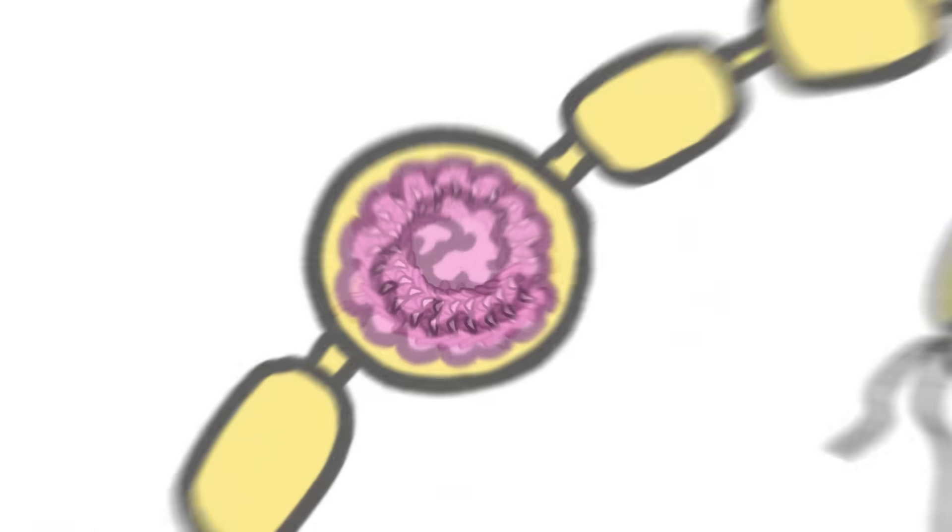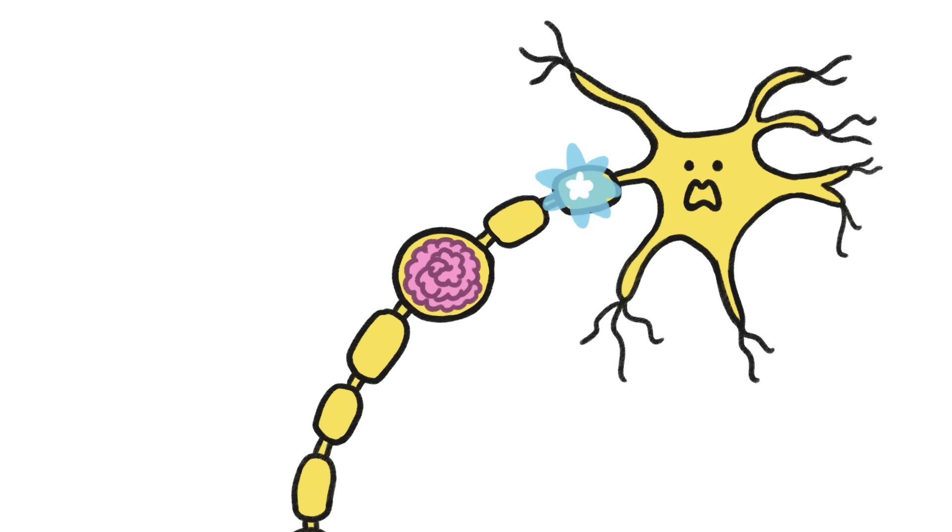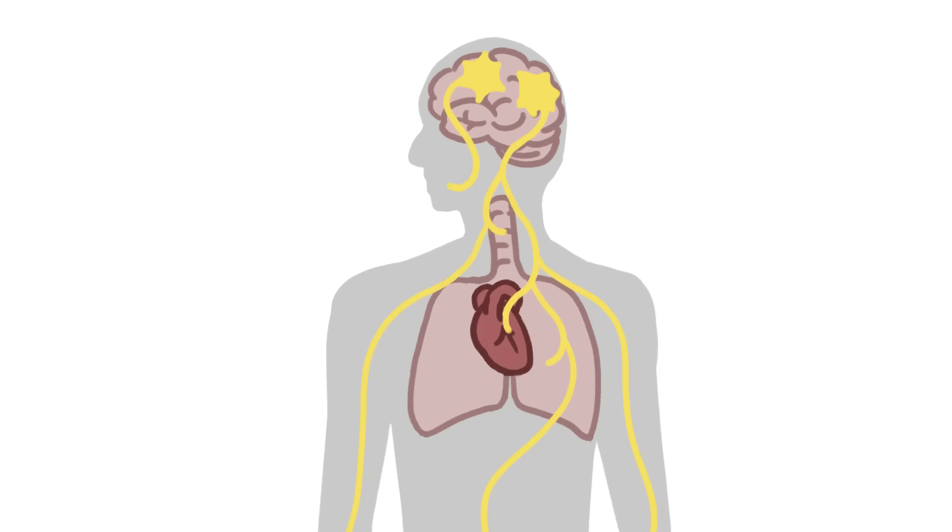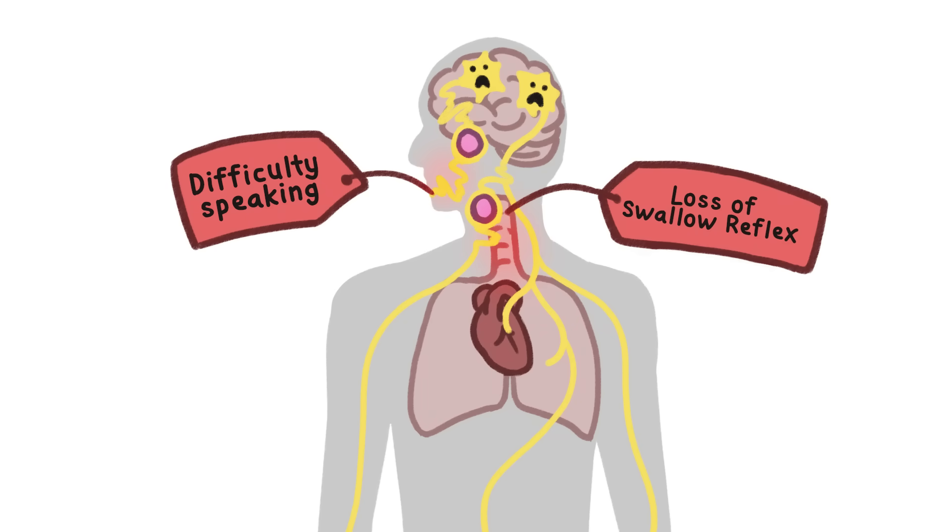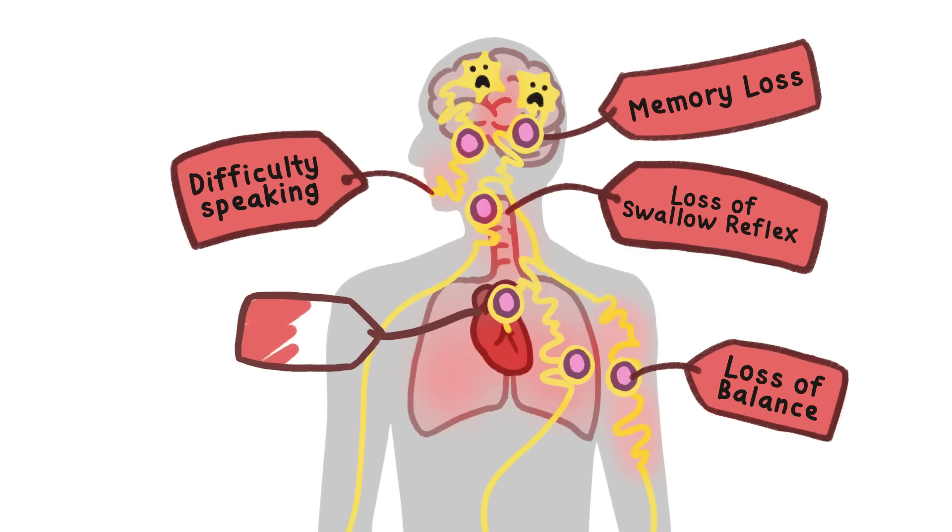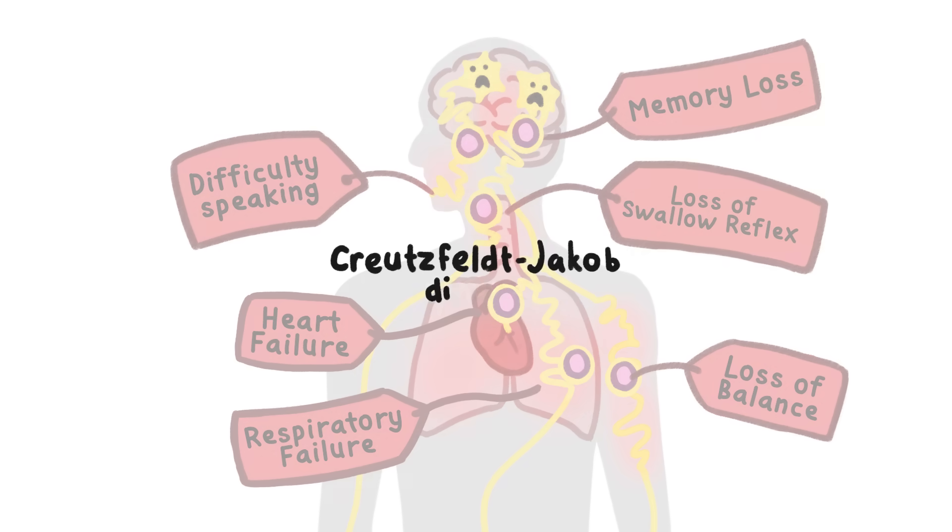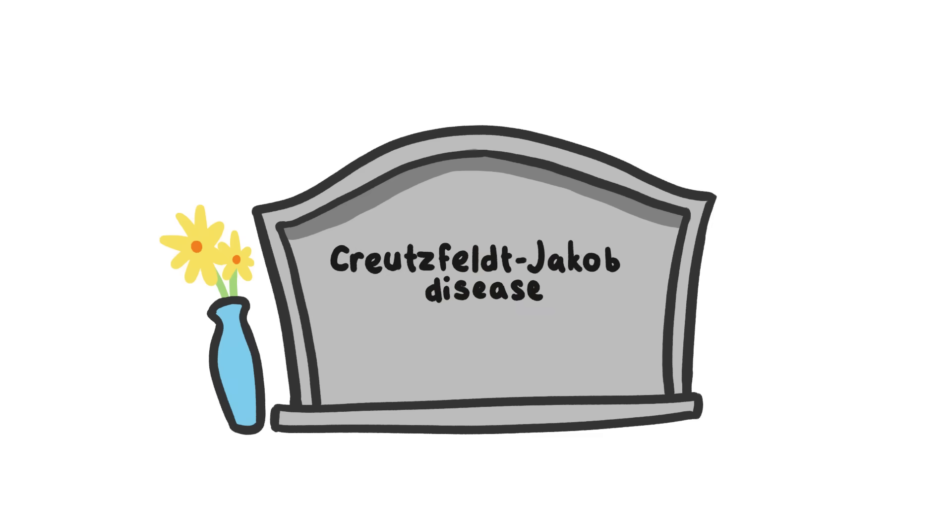Not only can these misfolded proteins no longer do their job, they also start stacking up into massive clumps within nerve cells, which block the nerves from sending out signals. Without these crucial signals, all sorts of body processes go haywire, causing everything from memory loss to organ failure. This disease, called Creutzfeldt-Jakob disease, inevitably leads to death, often in a matter of just weeks or months.